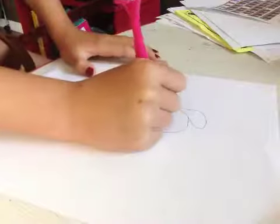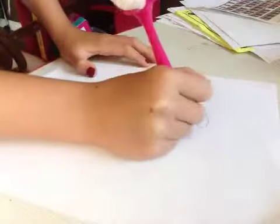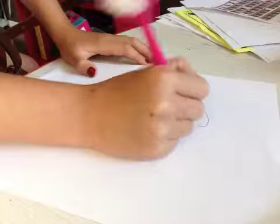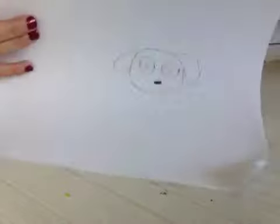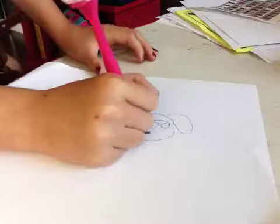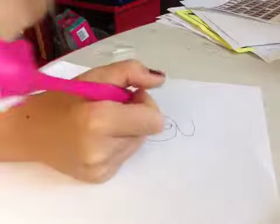Okay, now you do two big round eyes with two small round circles in them, coloring everything between the two circles. Okay.